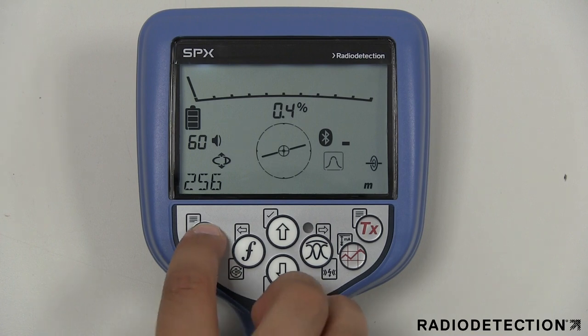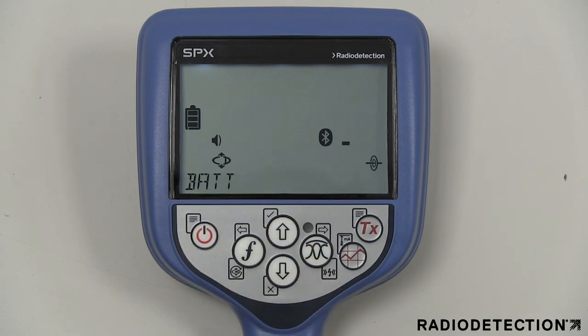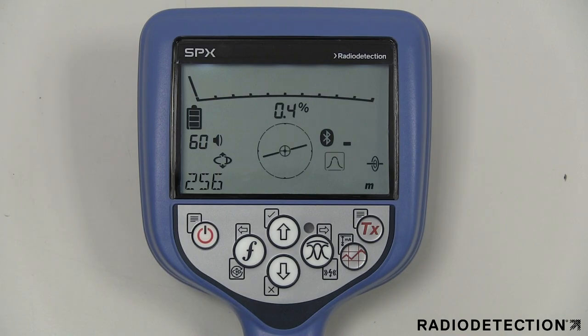The Bat menu option allows you to set the locator battery type to match the currently installed type. This ensures optimal performance and correct battery level indication. The battery options are alkaline, nickel metal hydride or lithium-ion, although lithium-ion rechargeable battery packs will automatically be detected by the locator.